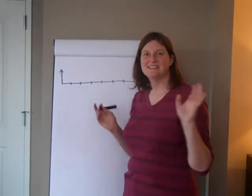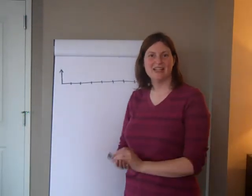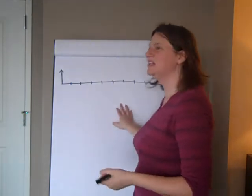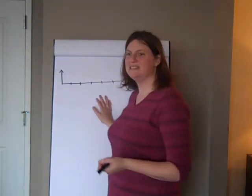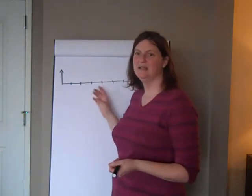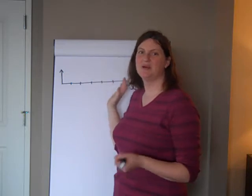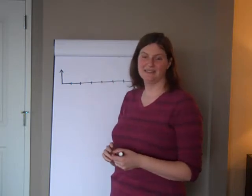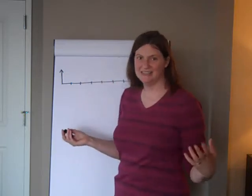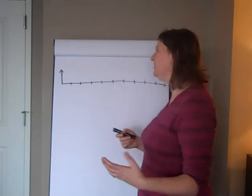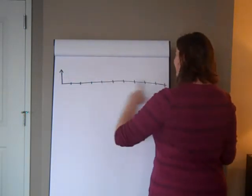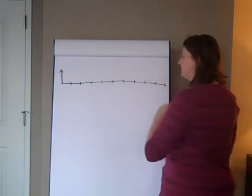Hello and welcome to lesson number six, the last one from New Jersey. This is going to be on multiple lenses, but the special case where one of the lenses makes an image behind the second lens. So multiple lenses, special case. For this you're going to need a straight line, an arrow, and at least ten little marks.